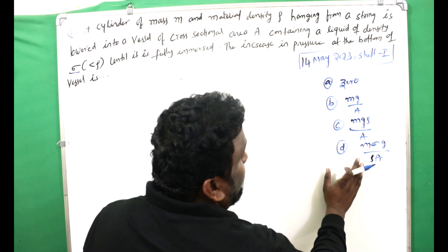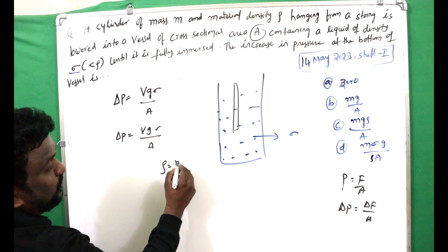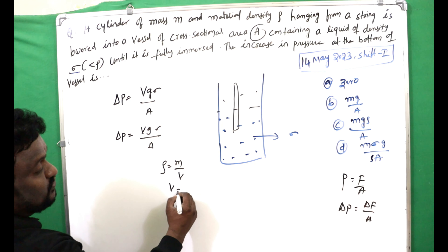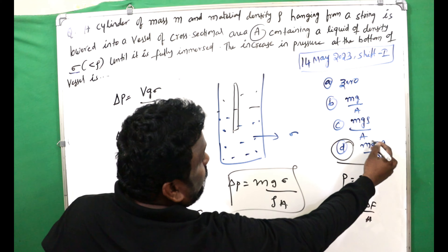The change in pressure equals change in force divided by A, so ΔP = Vg·σ / A. Since V·ρ = m, we have V = m/ρ. Substituting, ΔP = (m/ρ)·g·σ / A, which gives ΔP = mgσ / (ρA). Therefore option D is the correct answer.